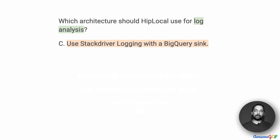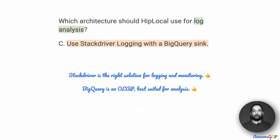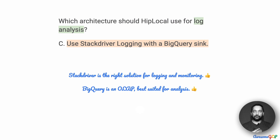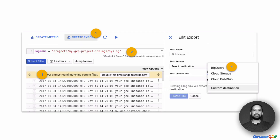Option C suggests that we use Stackdriver Logging but now with a BigQuery Sync. We already saw that Stackdriver is a great option — it has a ready-made way to collect metrics and logging and have them stored. For analysis, is BigQuery a good solution? Absolutely. BigQuery is an OLAP engine and is very well suited for analysis across large amounts of data and historical data using SQL queries. And with a couple of clicks, you can export data from the logs and have it stored in BigQuery.